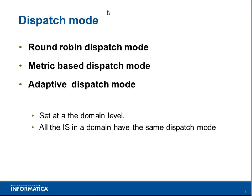Informatica has three dispatch modes, and they decide the fashion in which tasks will be sent to each of the nodes. First, round robin dispatch mode: in this mode, jobs are dispatched on a first-come, first-served basis. Round robin only considers the max process threshold while dispatching a job.